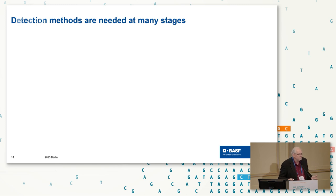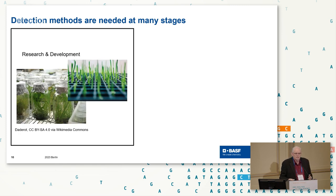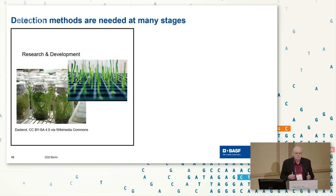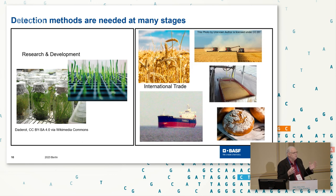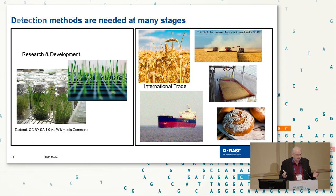Where do we need detection methods? We need them when we're developing a new edit — we want to make sure we've got the right one, because if we haven't, we've got a problem. We're doing selection, and that was the subject of our first publication. Then at the end of the chain, when you start moving things around the world and dealing with different regulatory systems, we're going to need these in international trade — and that's more the topic I'll cover.